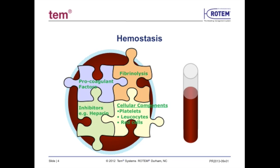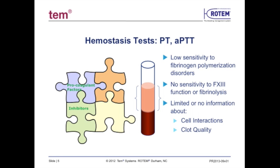Hemostasis is the balance between a condition of bleeding and clotting. In vivo, the body resorts to a multifaceted approach to maintain this balance. The natural balance of hemostasis involves whole blood and incorporates the elements of pro-coagulation factors, anti-coagulation factors, cellular components, and normal lysis mechanisms. This is why it is important to analyze hemostatic imbalance using whole blood samples.